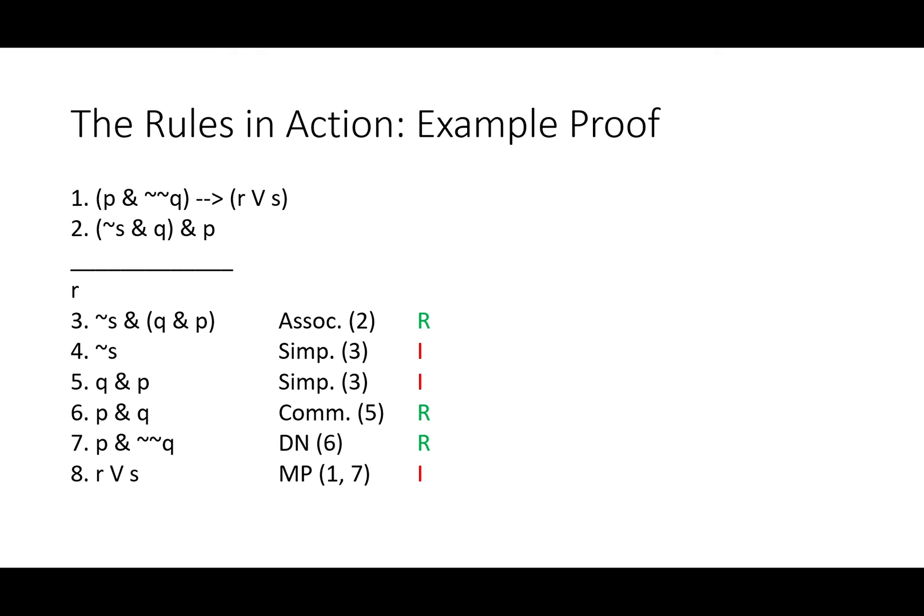Now we'll use our simple inference rule, modus ponens, and we'll get R or S. Now that line seven matches the antecedent in line one, which, remember, doing double negation the other way also would have done, we can get R or S.